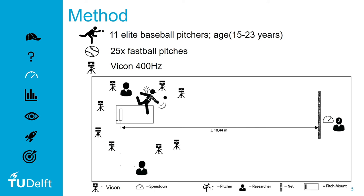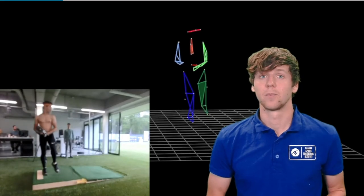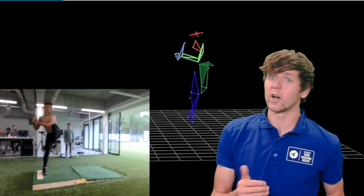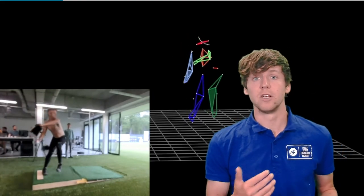Eleven youth elite baseball pitchers came to the laboratory and threw 25 fastball pitches. We measured their body kinematics with a Vicon motion capture system at 400 Hz. The overall ball speed of this group was 77 mph. The pitchers threw from a pitching mound towards a square striking zone at a regular game distance of 18 meters.